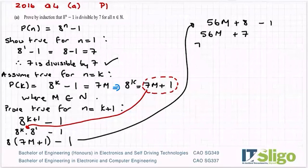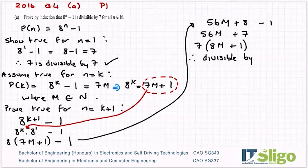Factor out the 7 because I want to show that it's divisible by 7. So I get 7 times 8m plus 1 there. Therefore that's divisible by 7. Therefore P of k plus 1 holds true assuming P of k is true.